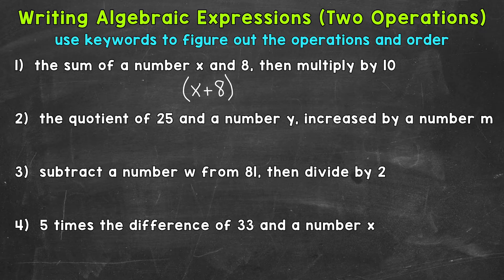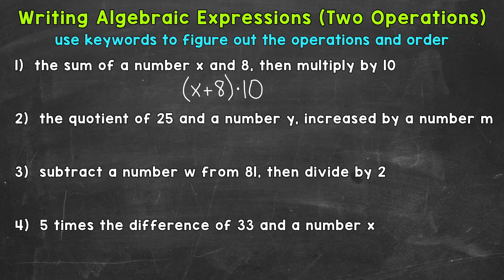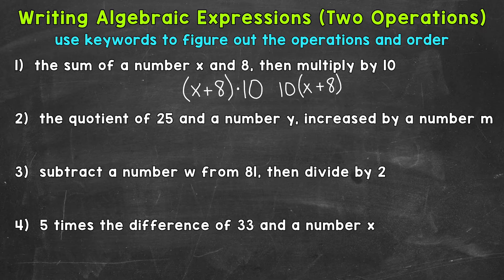Secondly, we need to then multiply by 10. There are different ways to represent multiplication within algebraic expressions. For this one, I'm going to use the filled-in circle or dot. So x plus 8 within parentheses times 10 would represent that phrase. We can also write 10 first, then the parentheses with x plus 8. Because of the order of operations, we do x plus 8 first and then multiply by 10. Remember, anytime you have a number next to parentheses, it represents multiplication.